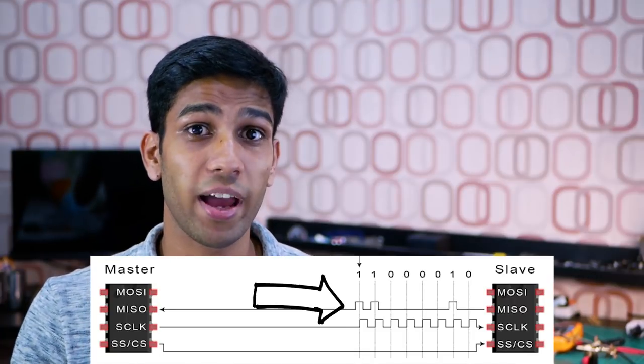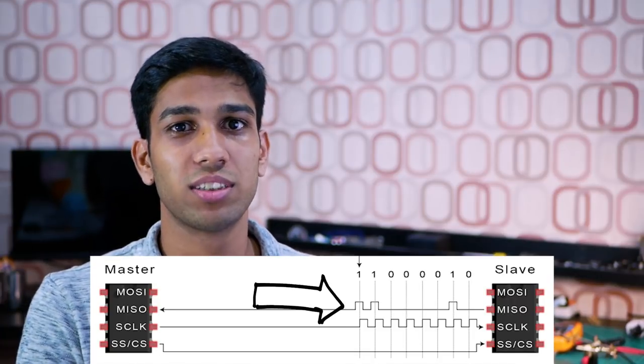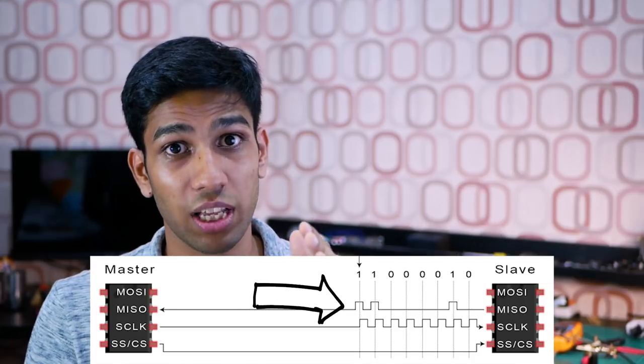Step number four: next, the master can actually request a slave to send information back to it. This is especially useful if your slave is a device like a sensor. So after step three is completed, which is the master sending information to the slave, the master can send a reply bit back to the slave, and then the slave will send its reply over the other cable, which is the master in slave out cable. That's how signals are sent over SPI.